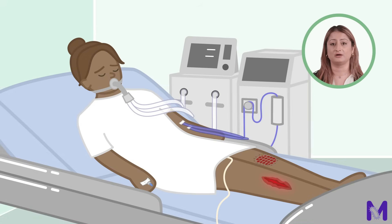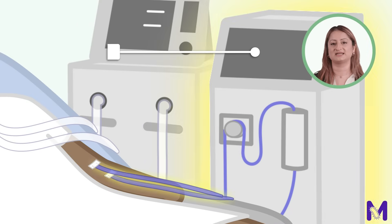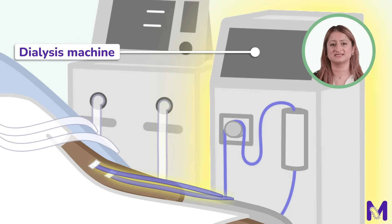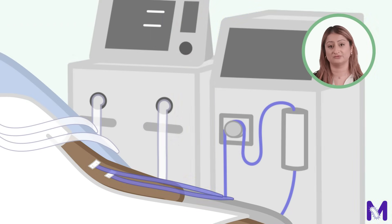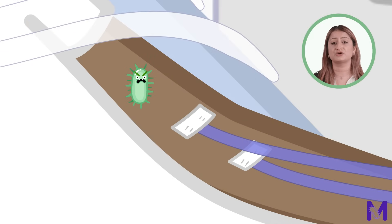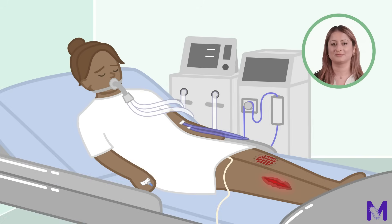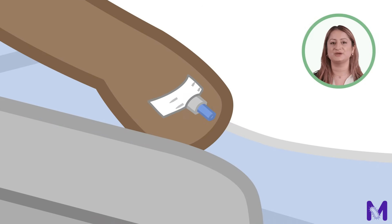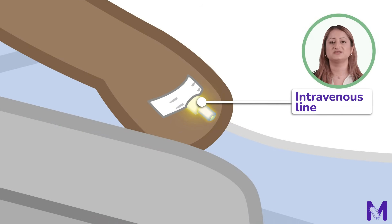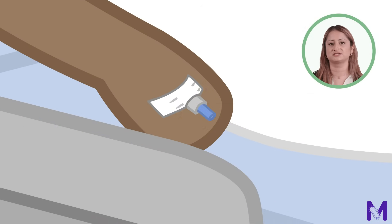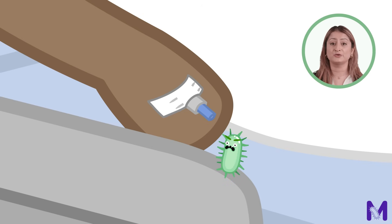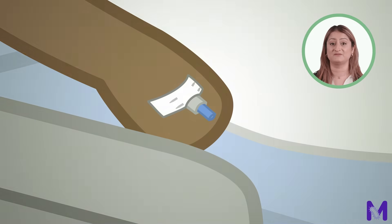Now let's move to the arm. Here we see an example of dialysis. Whilst dialysis is a crucial treatment for many patients, it can also create a greater risk of developing an NBL-producing bacterial infection. Looking closer at the hand, we notice an intravenous line. This small but vital device is another potential entry point for bacteria and can put the patient at a greater risk of developing an NBL-producing infection.